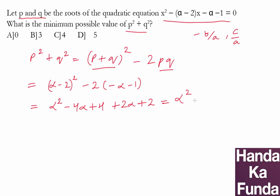plus 2 alpha will be minus 2 alpha, plus 4 plus 2 is 6. So this is alpha minus 1 whole square plus 5.